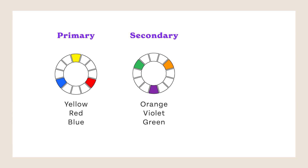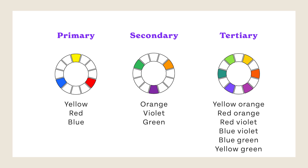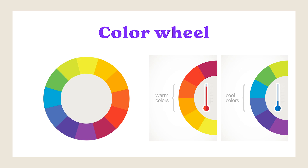Moving on to secondary colors — secondary colors are obtained by equally mixing primary colors. In the traditional color model, the secondary colors are green (yellow plus blue), orange (red plus yellow), and purple (red plus blue). When you mix yellow and blue in equal proportion you get green; mixing red and yellow creates orange; and mixing red and blue results in purple. Moving on to tertiary colors — tertiary colors are obtained by mixing a primary color with a secondary color, creating a wider range of colors.